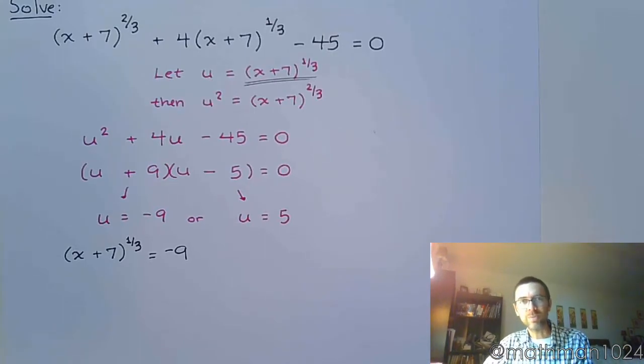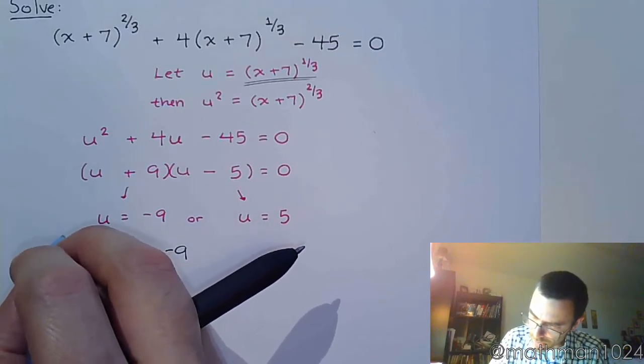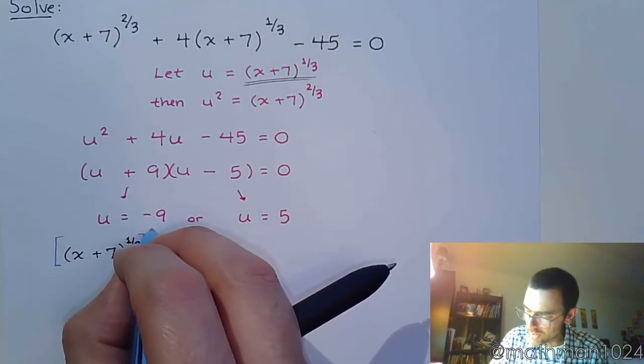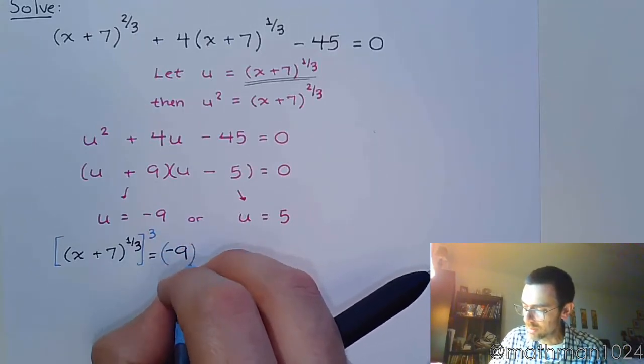And we just saw something like this. So when you've got a power that's a fraction, you can use the reciprocal power to undo this guy. So we're going to raise each side to the 3rd power like this.